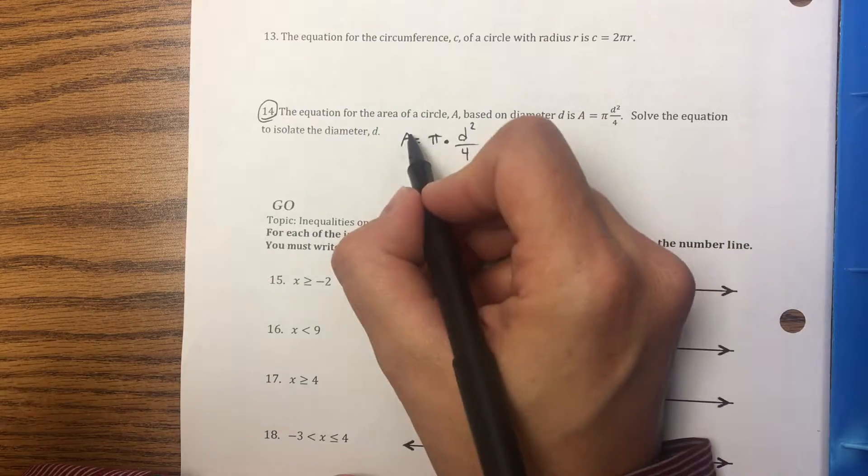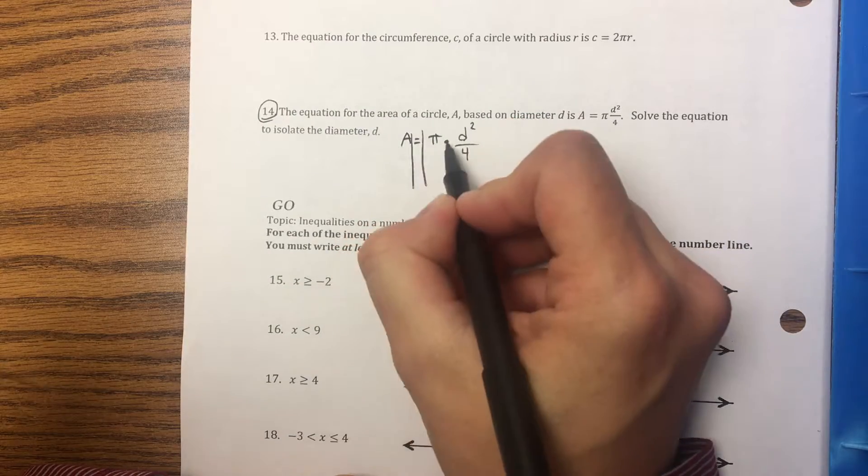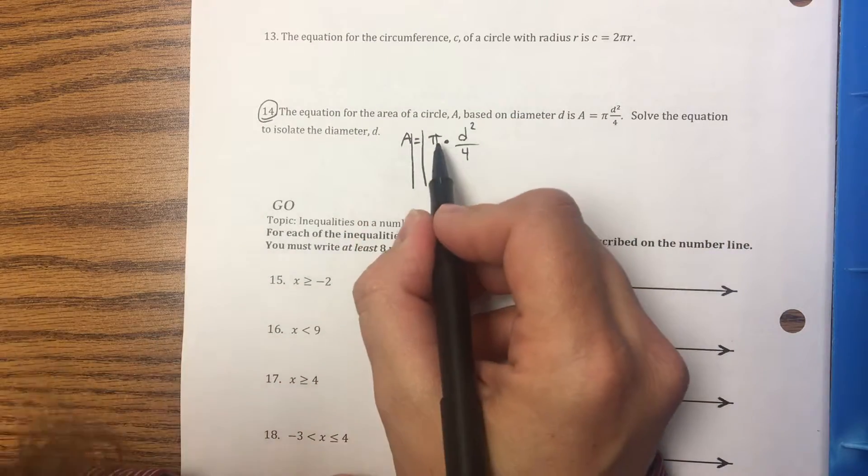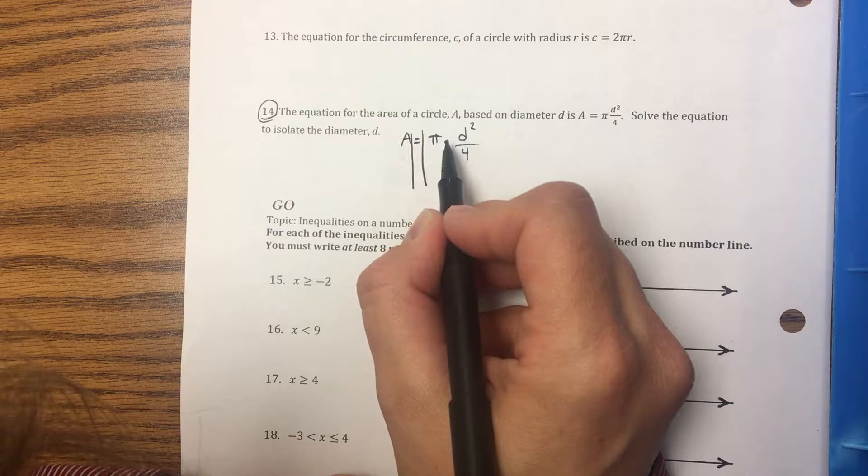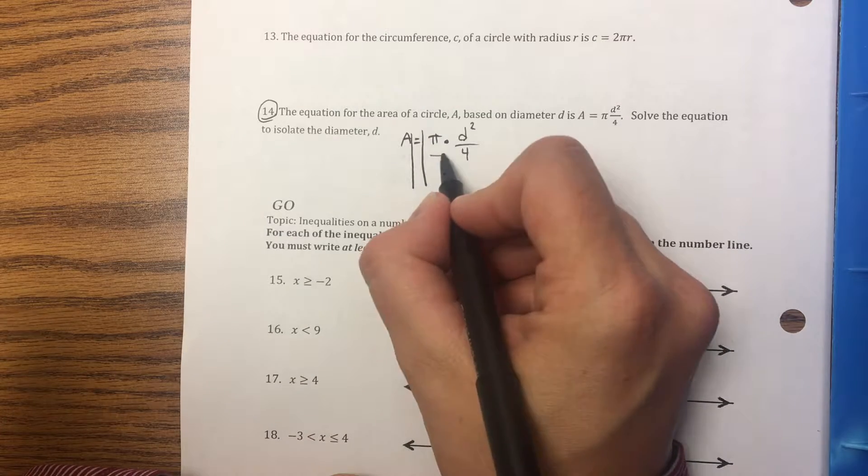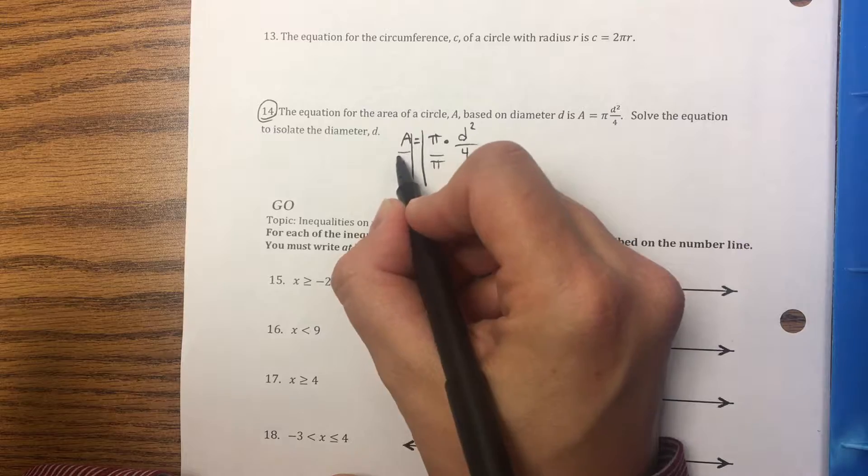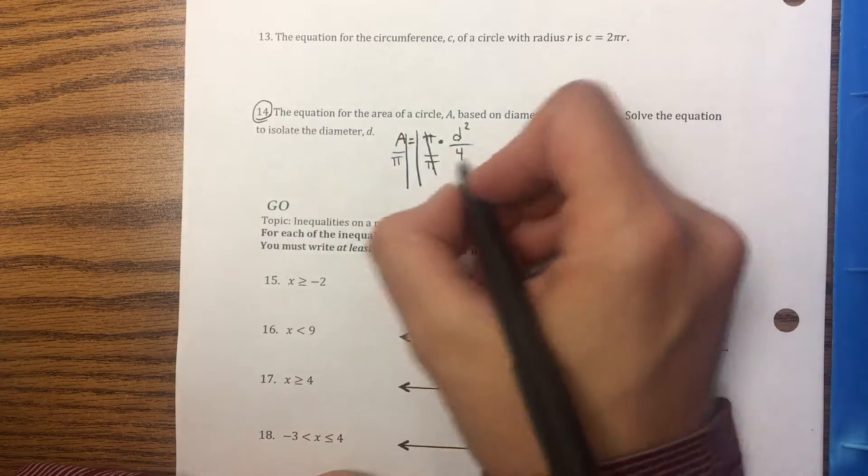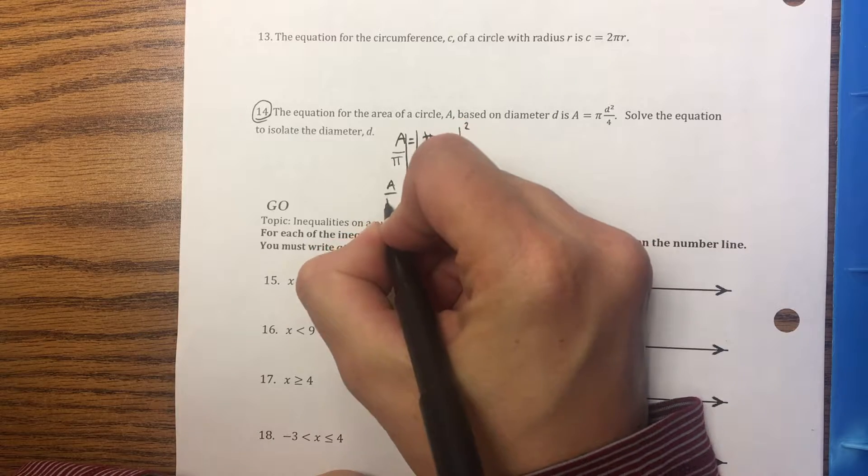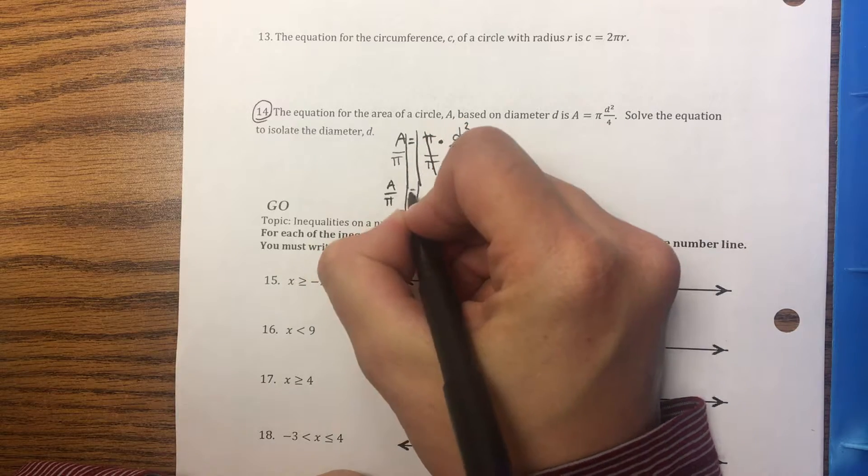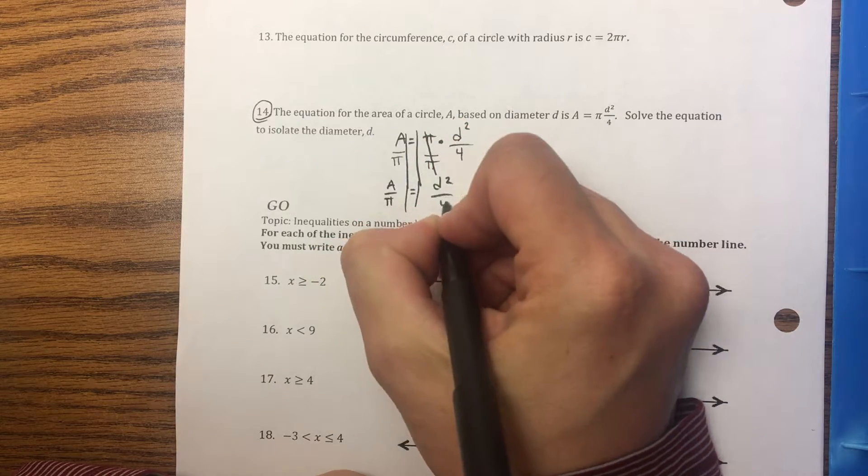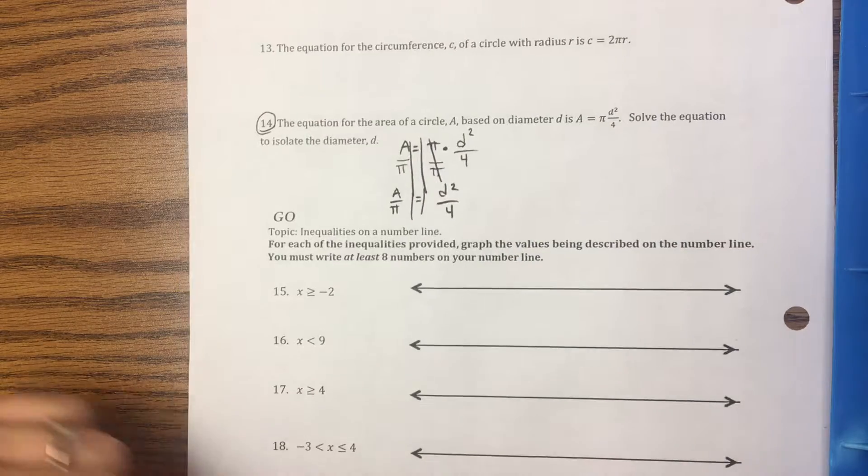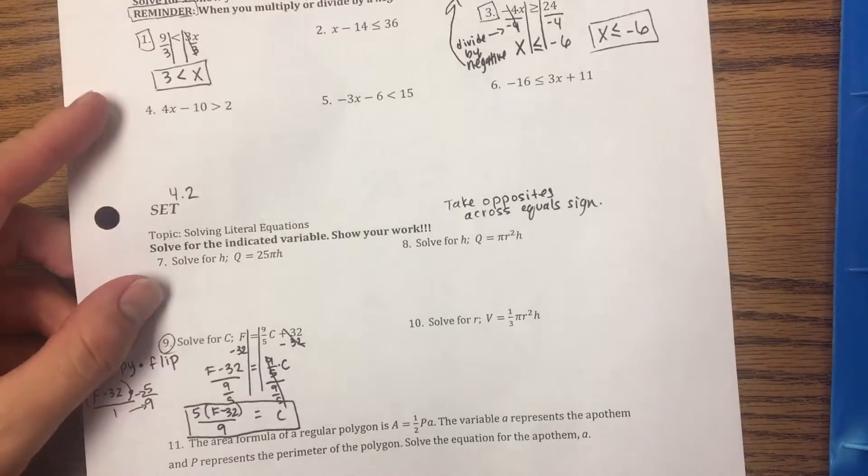So I rewrote it with the times because it's easier for me to see what the opposite is. If I need to get rid of pi, the opposite of times is divide, so I'm going to divide both sides by pi. And now I have a divided by pi equals d squared over 4.